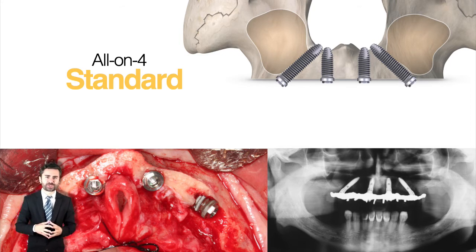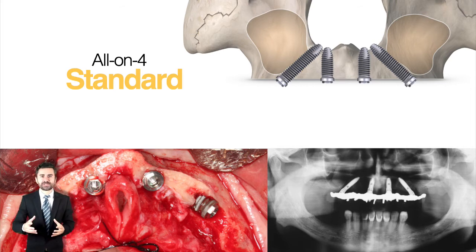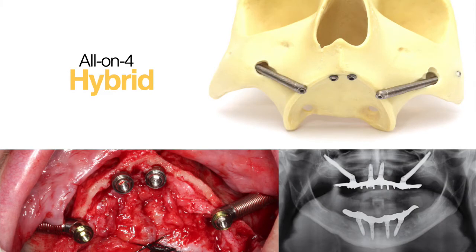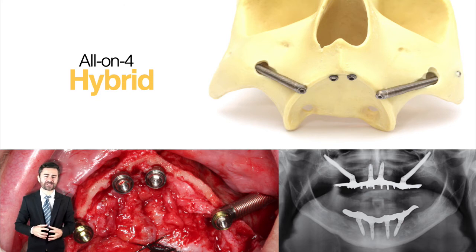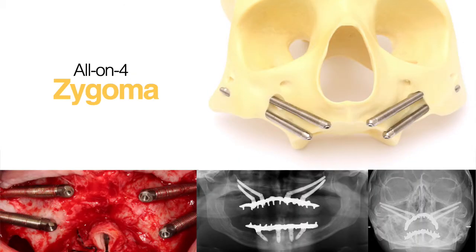When we do not have a viable bone structure to install the distal implants, but there is the condition to place two implants in the anterior region — usually adjacent to the incisive foramen — we will use the Alonfor Hybrid modality, where we associate two zygomatic implants to these two central implants. In cases of severe atrophy where there is no possibility to install implants in the maxilla, we will use the Alonfor Zygoma modality, where four zygomatic implants are placed in the zygomatic bone.